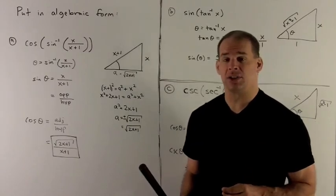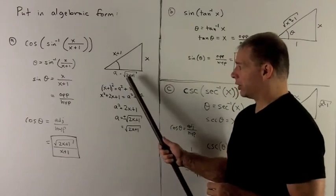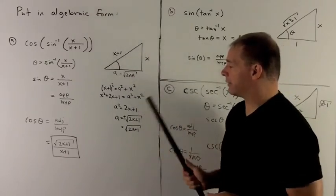I throw away the minus sign since we're sticking to the first quadrant. So radical 2x plus 1. That gives me all the info I need for this right triangle.